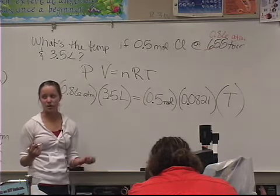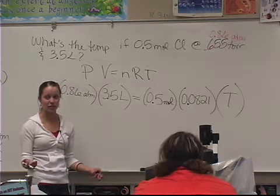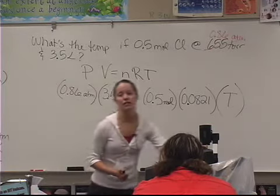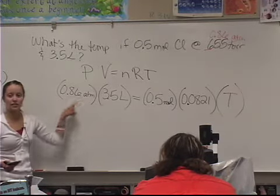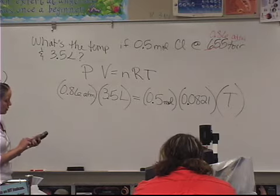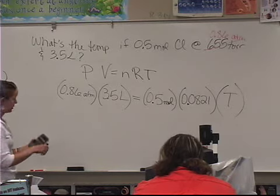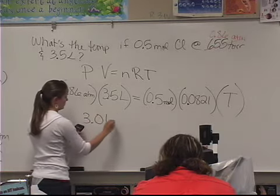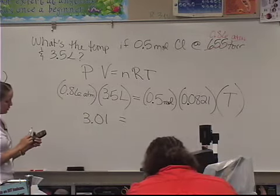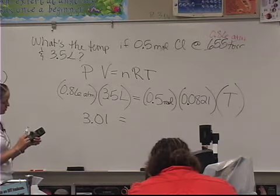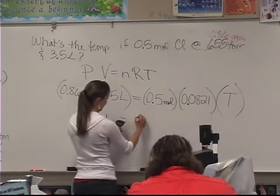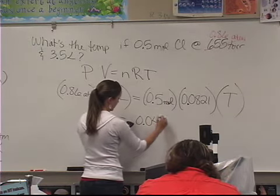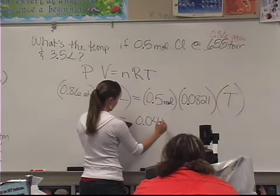T would be like X for algebra - just put a K there saying I'm missing the Kelvin here, whatever floats your boat. Then I just multiply them together like algebra. If you have two parentheses next to each other that means multiply. So 0.86 times 3.5, 0.5 times 0.0821. In this case you shouldn't round until the end.